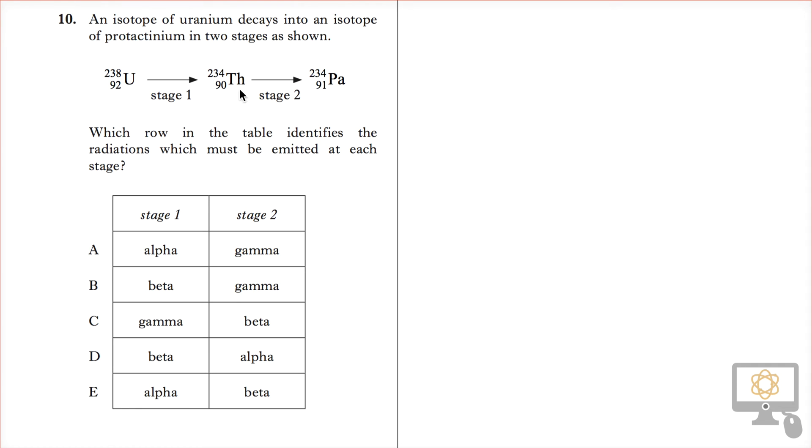What we have to do is look at the atomic numbers and the mass numbers. In stage one, the atomic number drops by two, so that must be an alpha decay.